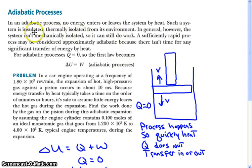Such a system could be in an insulator, or it could happen very rapidly so that there's not enough time for heat to transfer in or out of the system by the time the piston has done work on the gas or the gas has done work on the environment.